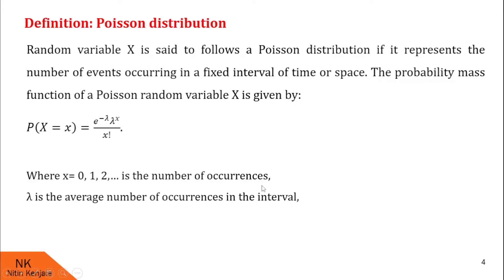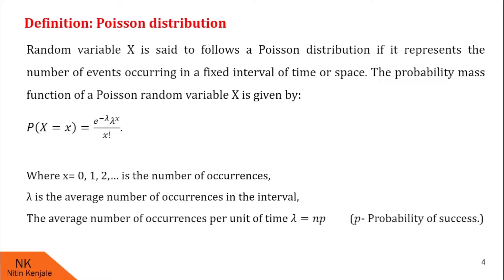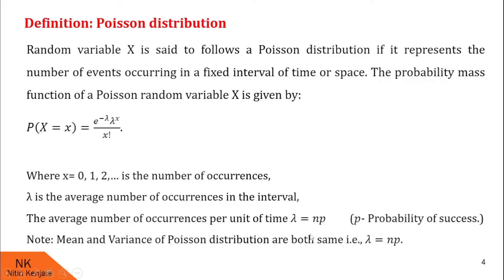And lambda is the average number of occurrences in the interval. The average number of occurrences per unit time are usually given by n into p, where n is the number of trials and p is the probability of success. We denote np as lambda. Note that the mean and variance of Poisson distribution are both the same — they are both given by lambda, and the value of lambda is nothing but n into p.